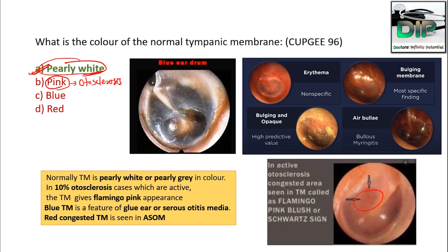In otosclerosis, the tympanic membrane is flamingo pink in color — this is also called Schwartze sign. A blue tympanic membrane is seen in glue ear, which is serous otitis media. A red, congested, bulging membrane is seen in ASOM — acute suppurative otitis media.